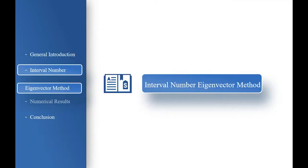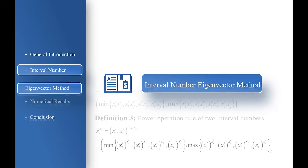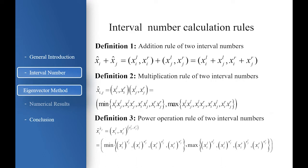Next, I will introduce the Interval Number EigenFact Method. In this part, we first introduce the definition of interval number and its algorithm. An interval number is expressed where the superscript L indicates the lower bound and the superscript R indicates the upper bound of the interval number. The multiplication rule and the power operation rule can be summarized as taking the maximum and minimum values of all combinations of the upper and lower bounds of two interval numbers.